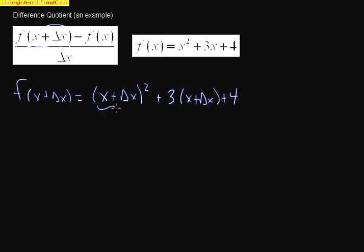Now I need to use my algebra and expand this. Make sure you expand this with FOIL and you're going to get x squared plus 2x delta x plus delta x squared. Then distribute the 3. So I have plus 3x plus 3 delta x plus 4.